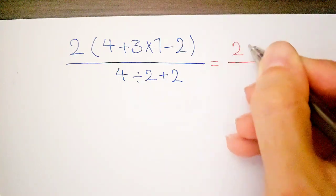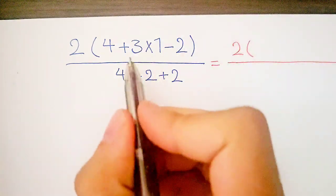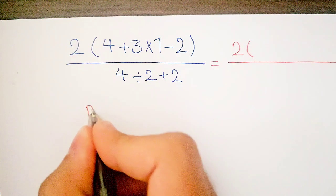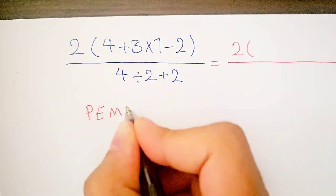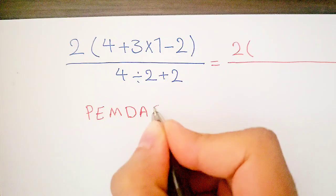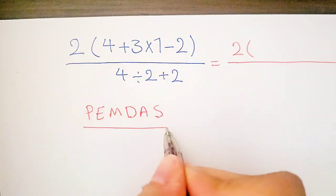According to the PEMDAS rule, first we simplify what's inside the parentheses. PEMDAS shows the priority of mathematical operations. In the parentheses we have one multiplication, one addition, and one subtraction.